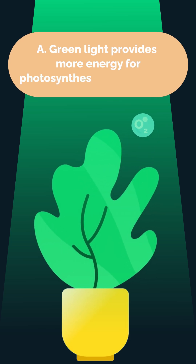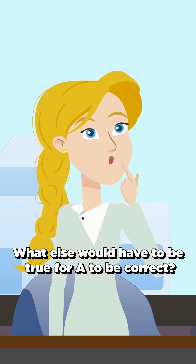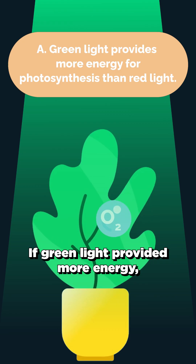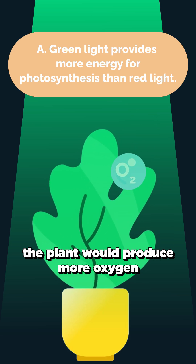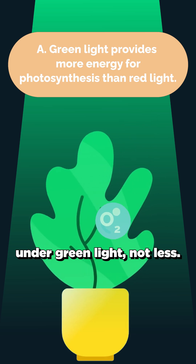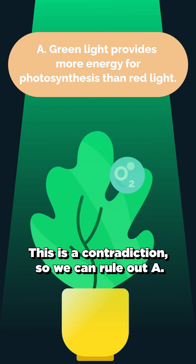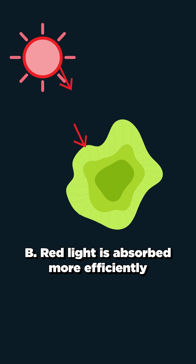A. Green light provides more energy for photosynthesis than red light. What else would have to be true for A to be correct? If green light provided more energy, the plant would produce more oxygen under green light, not less. This is a contradiction, so we can rule out A.